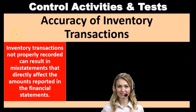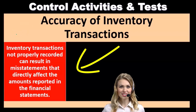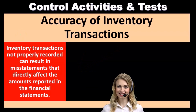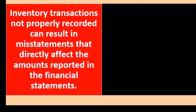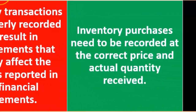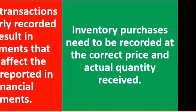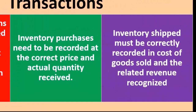The next assertion with regards to inventory transactions is accuracy. Inventory transactions not properly recorded can result in misstatements that directly affect the amounts reported on the financial statements. Inventory is generally material, and if something is inaccurately reported, there will be a direct effect on the financial statements — and we are here to give an opinion on their accuracy. Inventory purchases need to be recorded at the correct price and the actual quantity received.